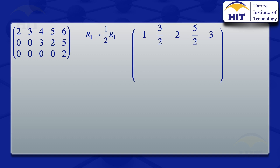Moving on to the second row, the distinguished element is 3, and we need a 1 in that position, so we divide by 3. The elementary row operation is R2 → (1/3)R2. Dividing each element: 0/3 = 0, 0/3 = 0, 3/3 = 1, 2/3, 5/3.